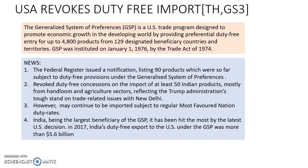USTR Revokes Duty-Free Imports. To understand this, we first need to understand what the Generalized System of Preferences is. The United States of America trade program is designed to help the developing countries of the world to improve their economic production by exporting their goods to the United States at free of duty. Under this provision, up to 4,800 products from 129 designated beneficiary countries are allowed into the United States of America.